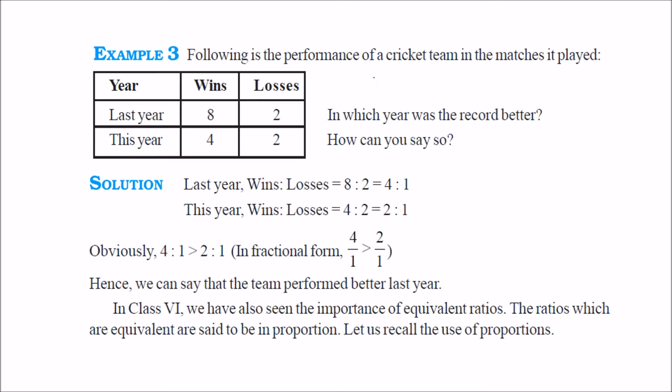We have one more example. This is the performance of cricket team in the matches it played. Last year it was 8 wins with 2 losses, so it is 8 is to 2. This year it is 4 is to 2. How to compare 8 by 2 and 4 by 2? So this becomes 4 is to 8, 2 is to 4. So 4 and 2, you know that in 4 and 2 which is the higher, 4 is higher. So the previous year or last year standing was good or the performance was quite good.